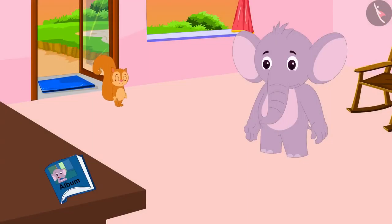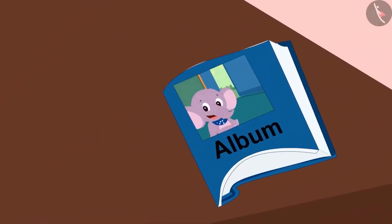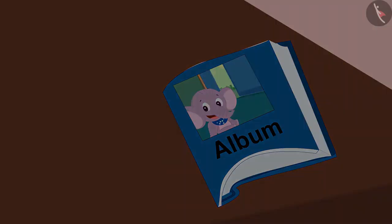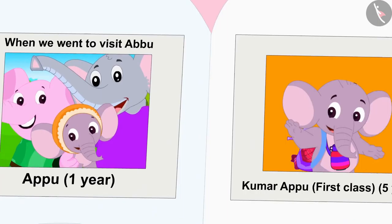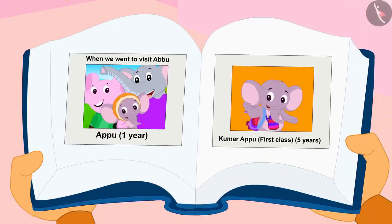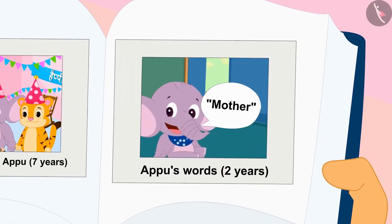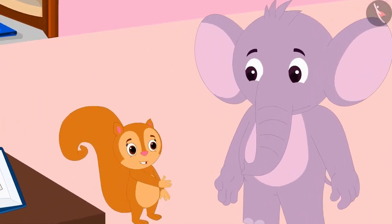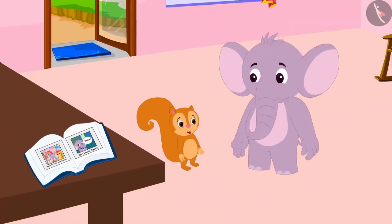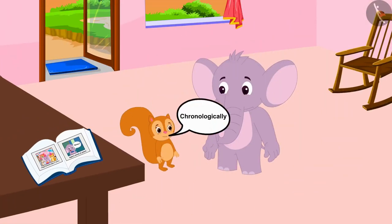Chanda has come to Appu's house. She saw a photo album at Appu's house and opened it, starting to look through it. The album contained many photographs from Appu's childhood to date. Chanda told Appu, why don't they together arrange those pictures chronologically from his childhood to date?